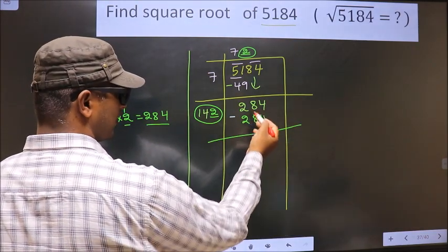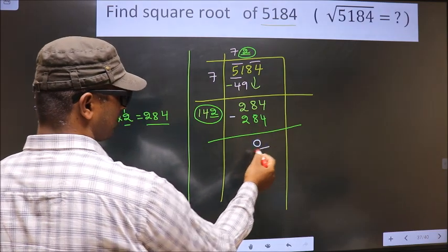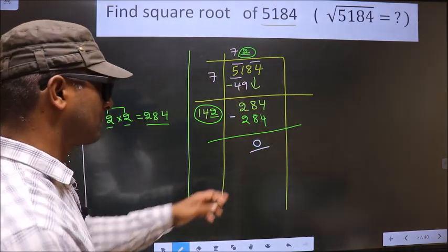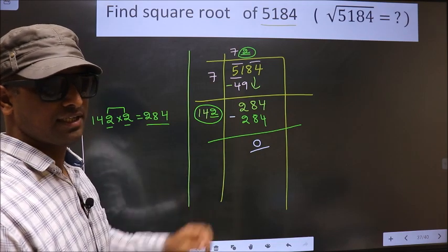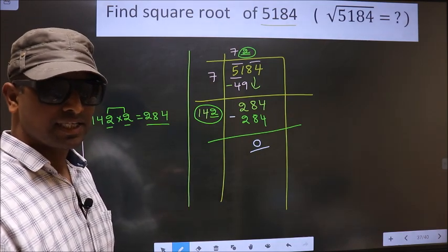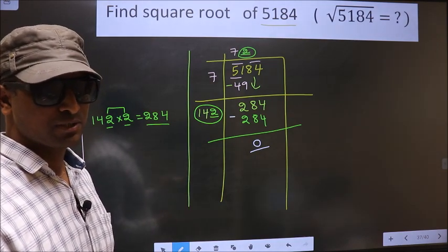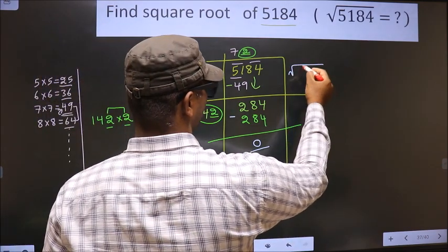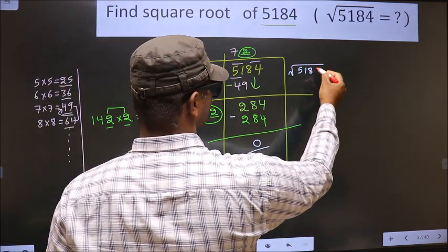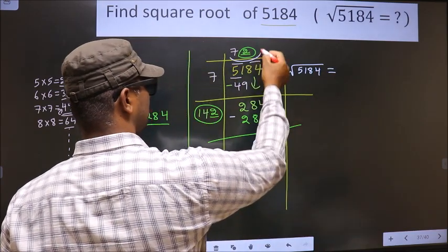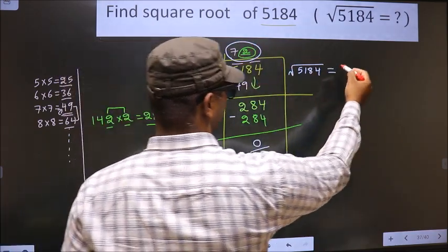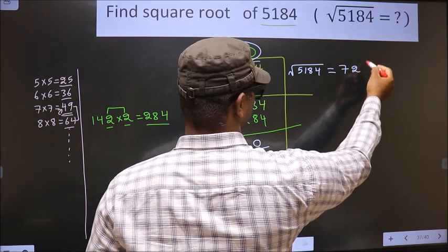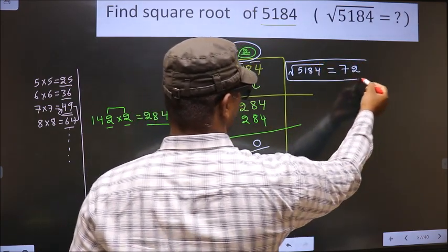You should subtract: 284 minus 284 will give us 0. We got 0 here. That means the given number is a perfect square, and the square root of 5184 is this number, that is 72. So this is our answer.